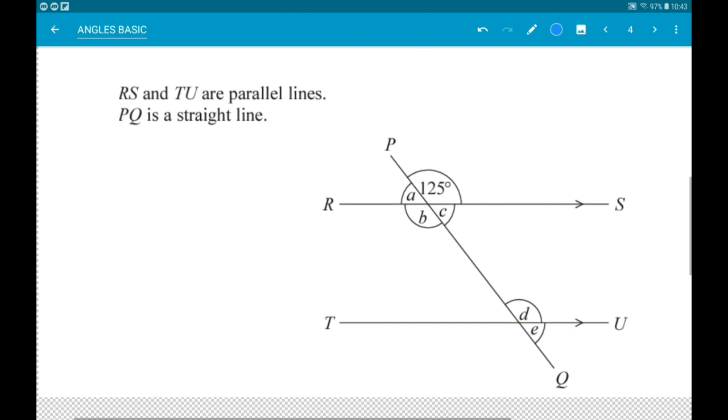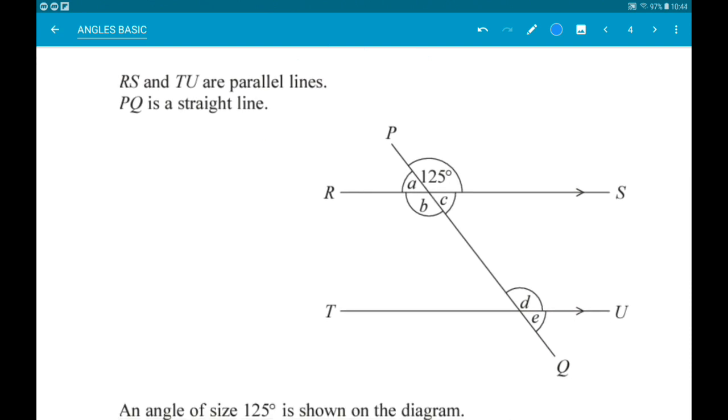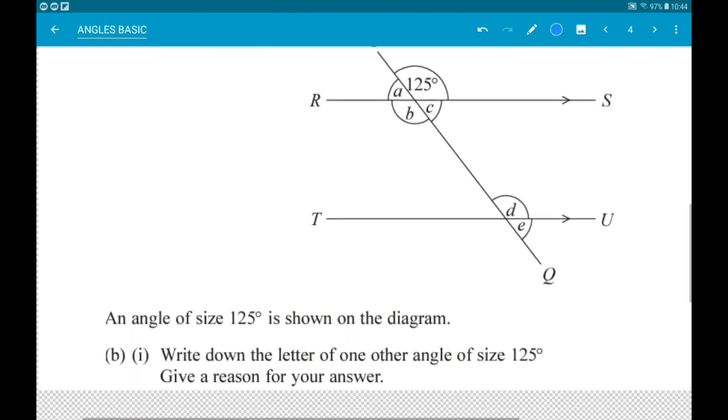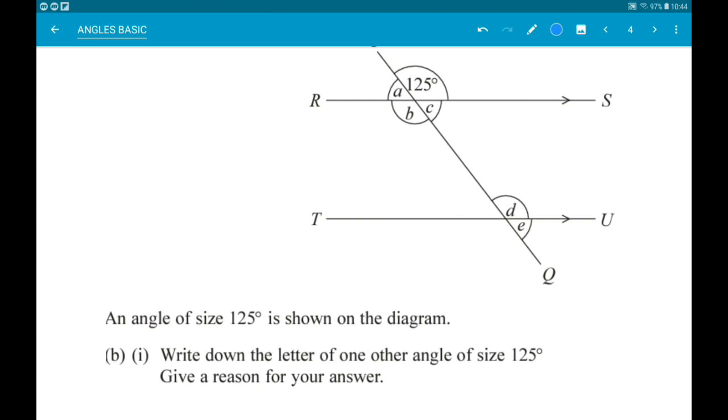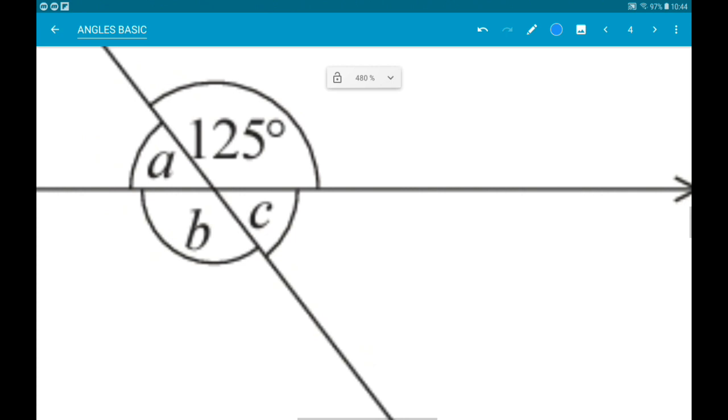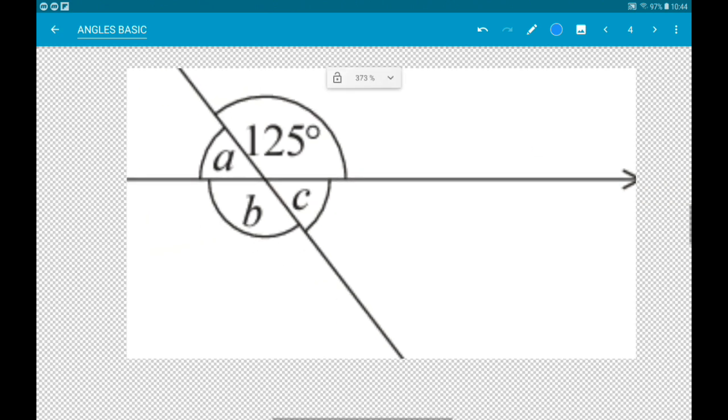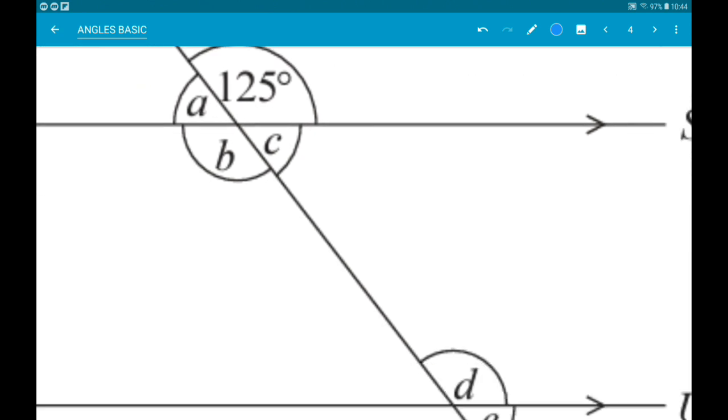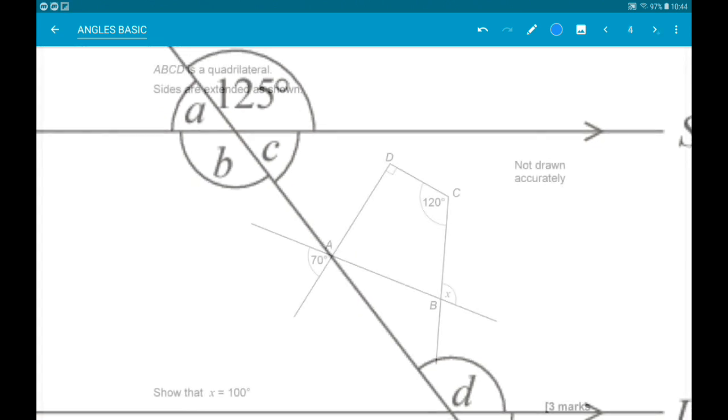Next up, RS and TU are parallel lines. PQ is a straight line. One of the angles on the diagram is 125 degrees. We want to write down the letter of one other angle which is also 125 degrees, giving a reason for our answer. So there are two possibilities. Either angle B and the reason for that is vertically opposite, or angle D which is corresponding.